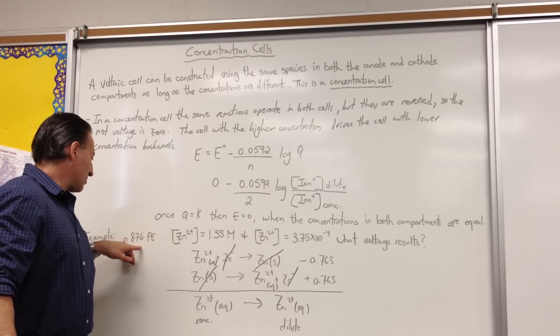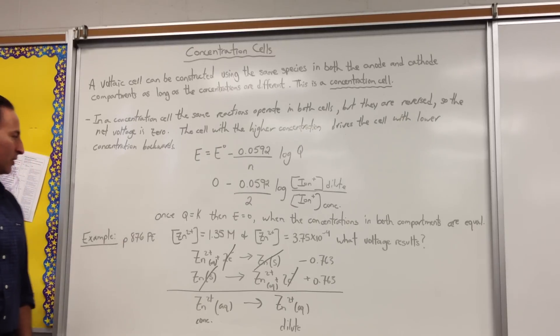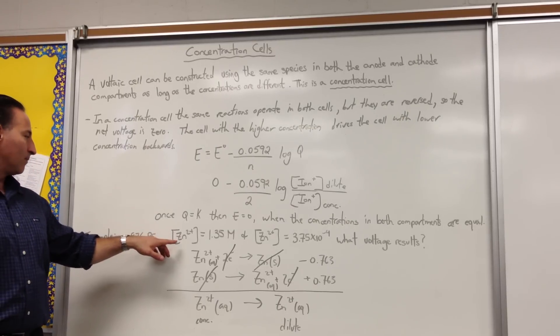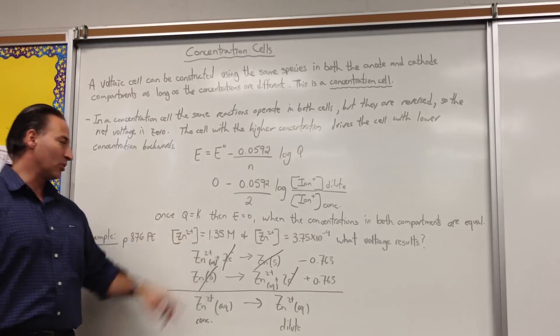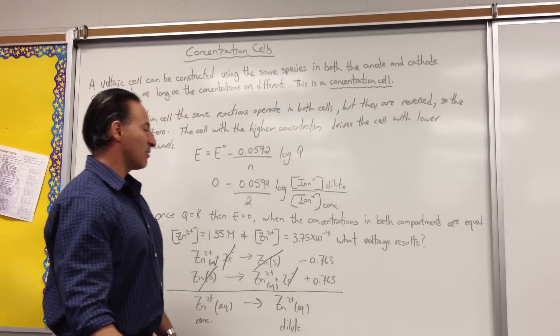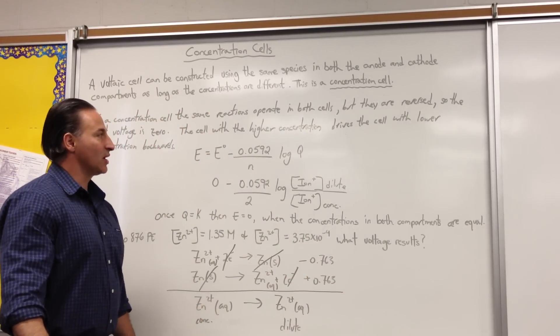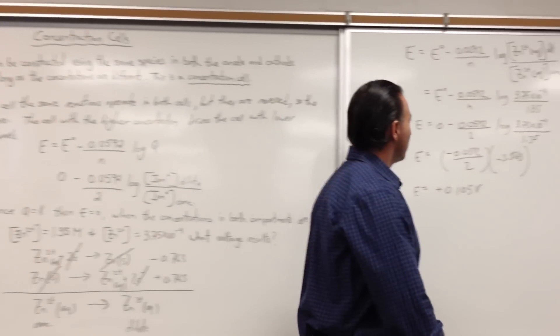So, in this example, which comes from page 876 of our text, which is Brown, we have a zinc concentration of 1.35 molar on one side of the cell, and 3.75 times 10 to the minus 4 molar on the other side. We would enter those concentrations into the Nernst equation.